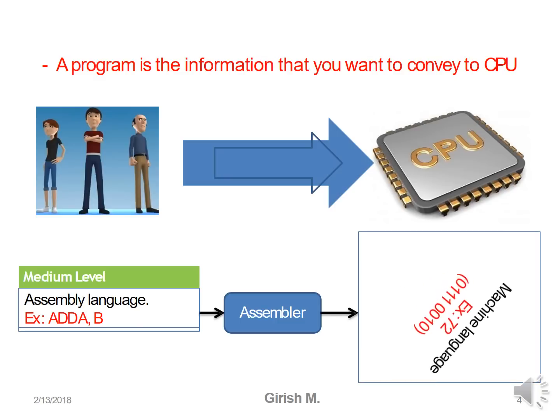If you know the syntaxes, you can program the CPU using embedded C or C programs. Assembly level language, on the other hand, requires knowledge of the specific architecture of the processor or controller you're using. Based on that, you use mnemonics with assembly directives, and the assembly level program is fed to an assembler, which converts it into machine level language that the CPU can understand.